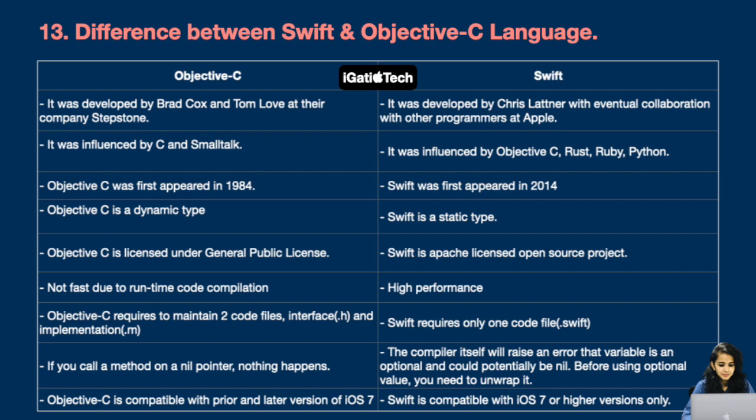Next question: difference between Swift and Objective-C. Objective-C was developed by Brad Cox and Tom Love at their company Stepstone, whereas Swift was developed by Chris Lattner with eventual collaboration with other programmers at Apple. Objective-C was influenced by C and Smalltalk, whereas Swift was influenced by Objective-C, Rust, Ruby, and Python.